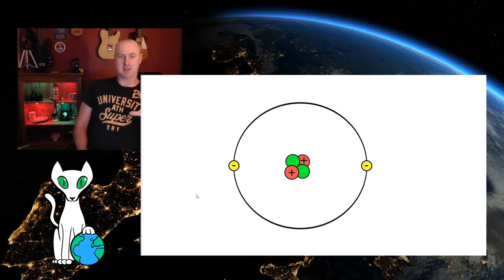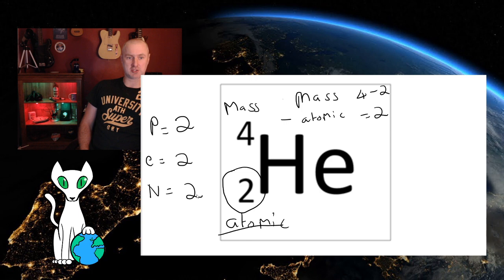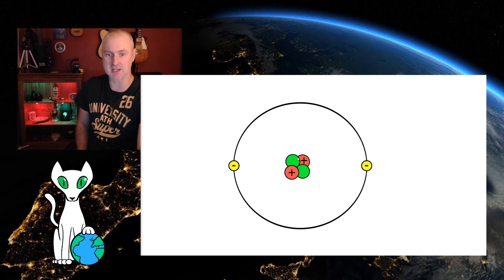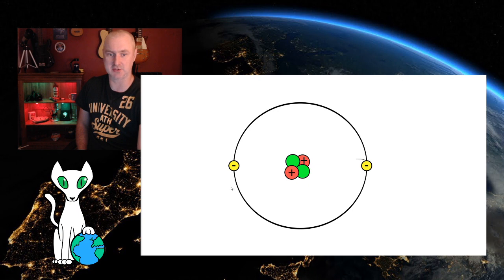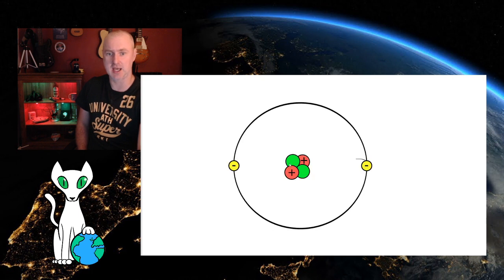So the mass number take away the atomic number will give me the number of neutrons. Now, if I show you the atom of helium shown as a diagram, we can see what we've just modeled. We looked at two protons. We said there'd be two protons because of the atomic number. We can see those in red here with a positive charge. We said there will be two electrons. And we can see the two electrons here. And we said that there will be two neutrons because four minus two is two. And here are our two neutrons here.